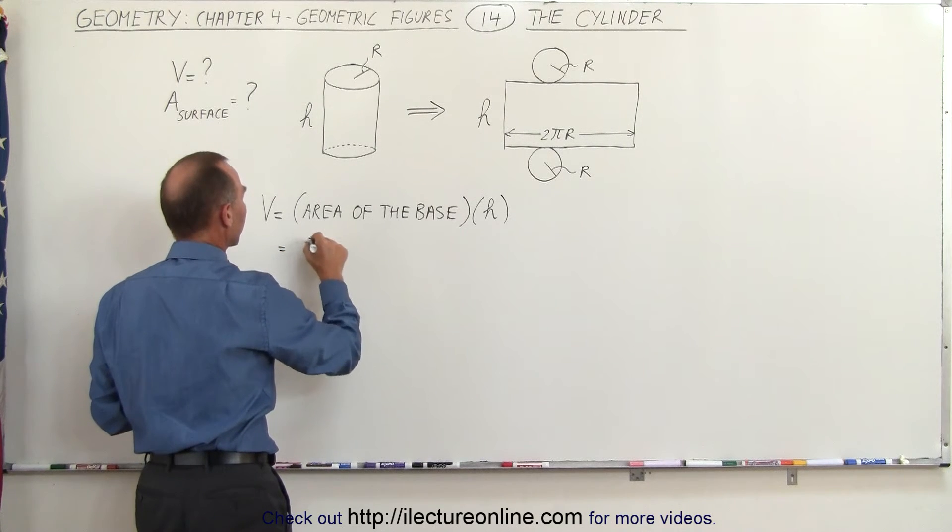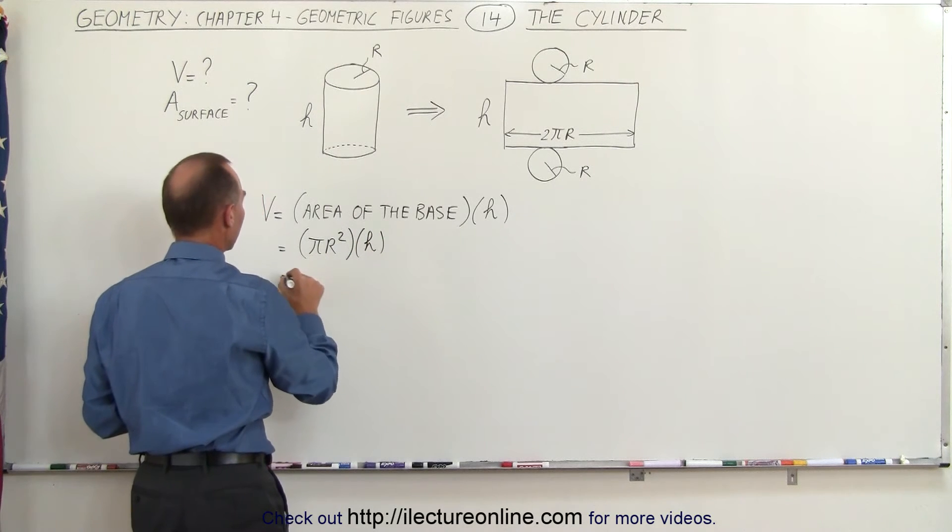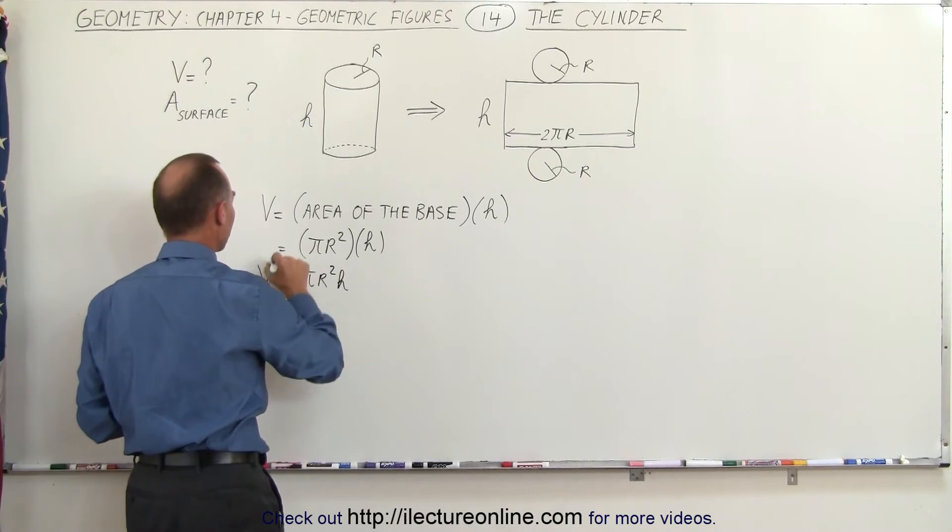And this would then become, the area of the base would be the area of the circle, which is πr², and I'll multiply that times h. So essentially, this becomes πr²h, which is the volume of that.